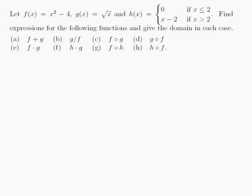Let f be equal to x squared minus 4, g be equal to the square root of x, and h be equal to 0 if x is less than or equal to 2, and x minus 2 if x is greater than 2. Find expressions for the following functions and give the domain in each case — there are 8 functions to find.